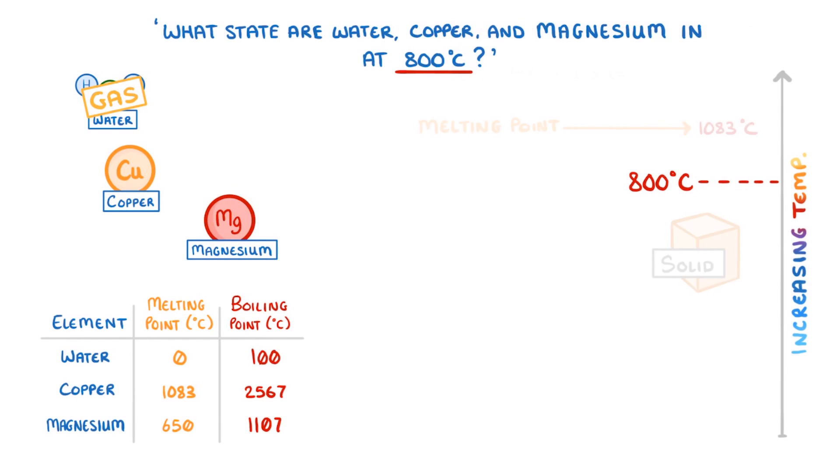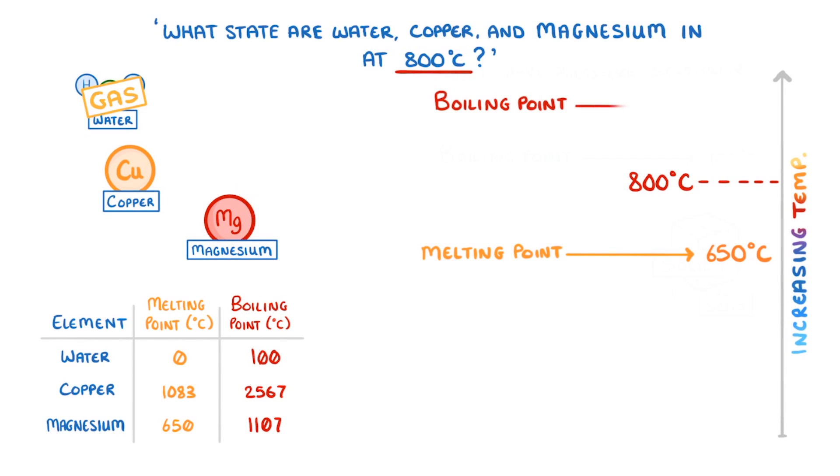And finally magnesium has a melting point of 650 degrees, and a boiling point of 1,107 degrees. So it will be between the two, and so a liquid.